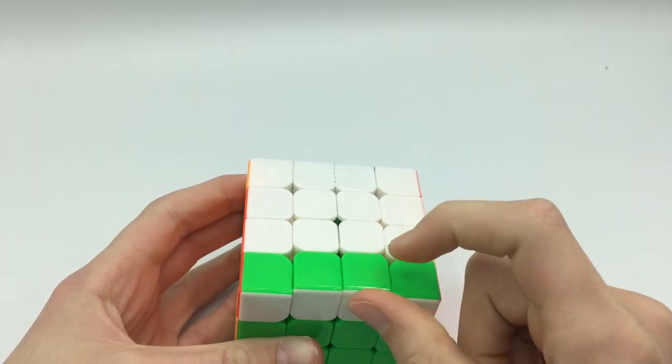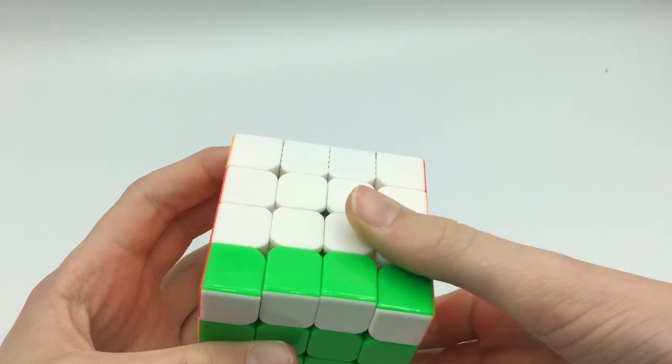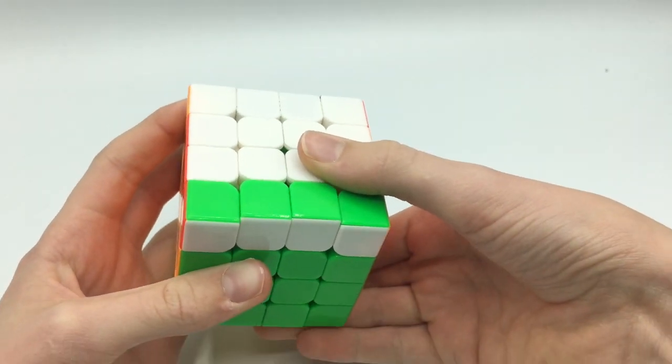OLL parity is when you get an edge flip, like this. And to do it, it's like this.